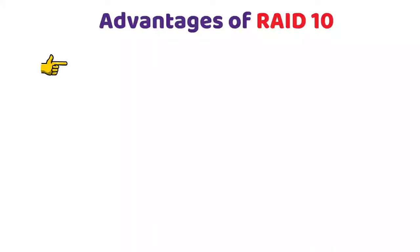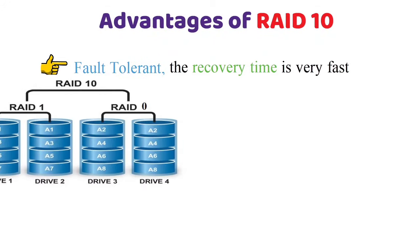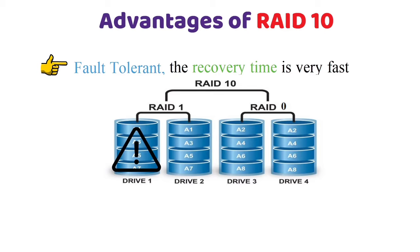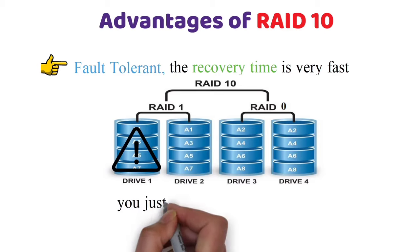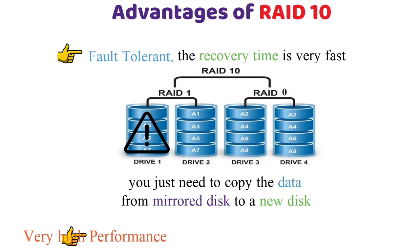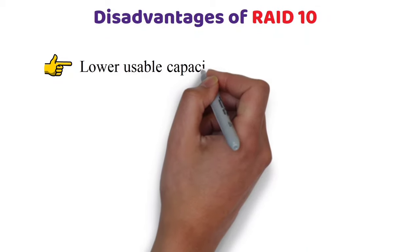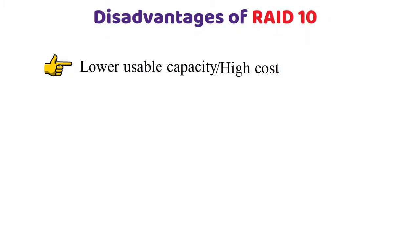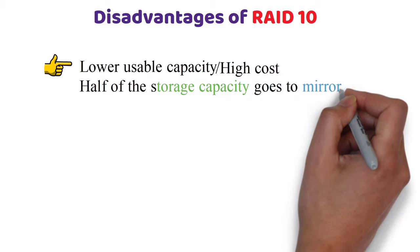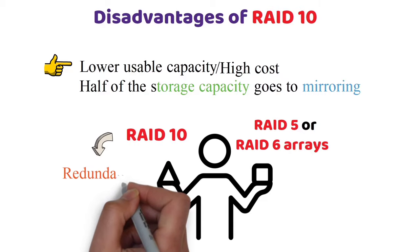Advantages of RAID 10: Fault tolerant — recovery time is very fast if something goes wrong with one of the disks, because you just need to copy the data from the mirrored disk to a new disk. Very high performance. Disadvantages of RAID 10: Lower usable capacity and high cost — half of the storage capacity goes to mirroring. Compared to a large RAID 5 or RAID 6 array, this is an expensive way to have redundancy.